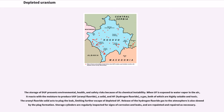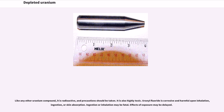When UF₆ is exposed to water vapor in the air, it reacts with the moisture to produce uranyl fluoride (UO₂F₂), a solid, and hydrogen fluoride (HF), a gas — both of which are highly soluble and toxic. The uranyl fluoride solid acts to plug the leak, limiting further escape of depleted UF₆. Release of the hydrogen fluoride gas to the atmosphere is also slowed by the plug formation. Storage cylinders are regularly inspected for signs of corrosion and leaks, and are repainted and repaired as necessary.